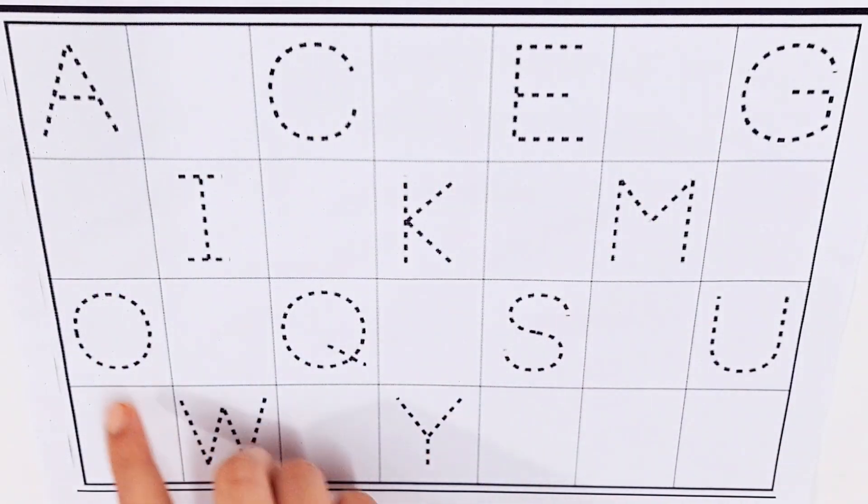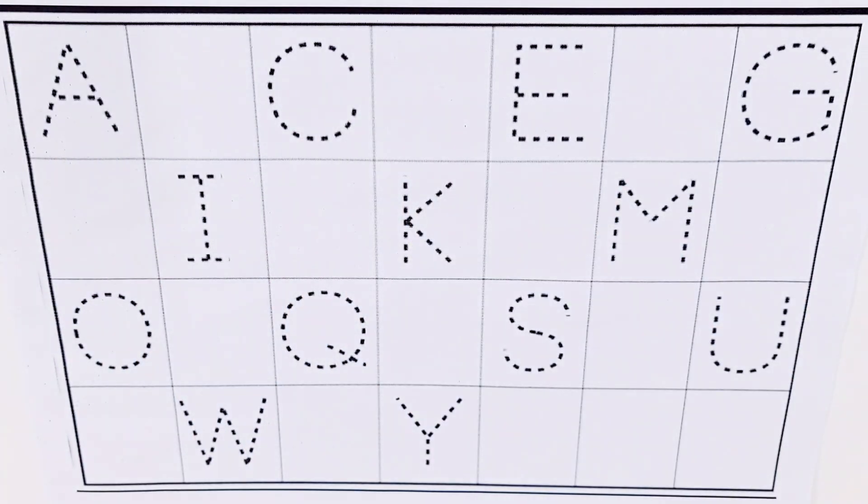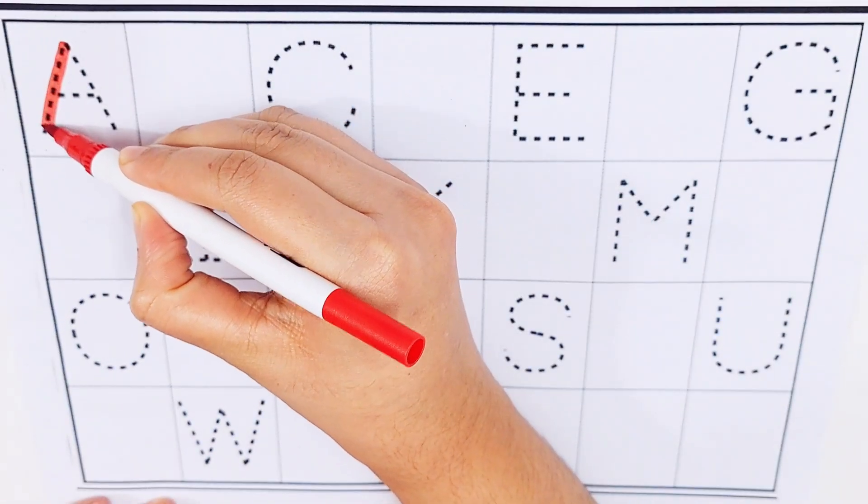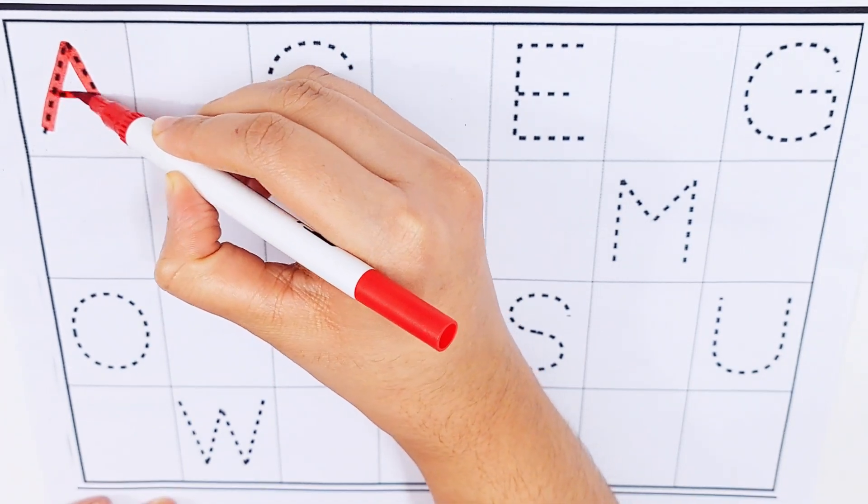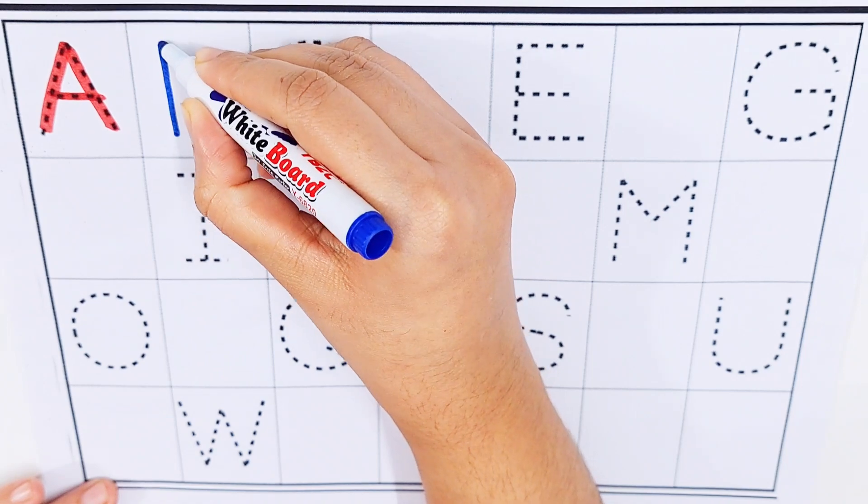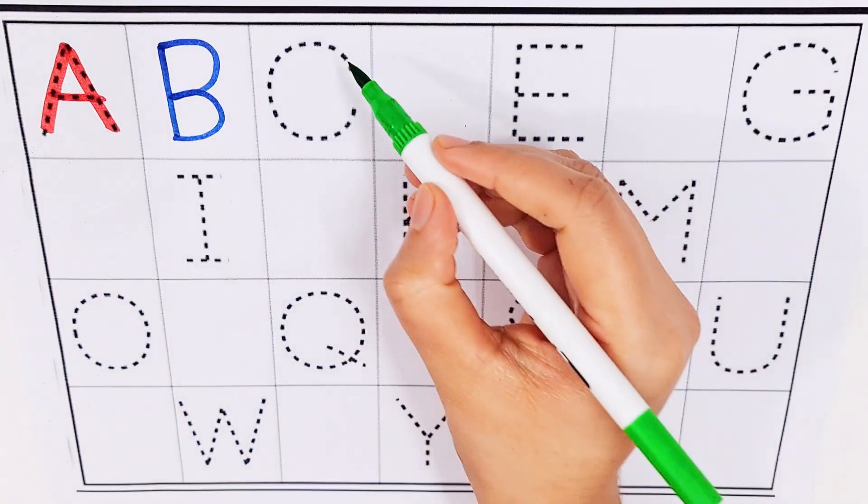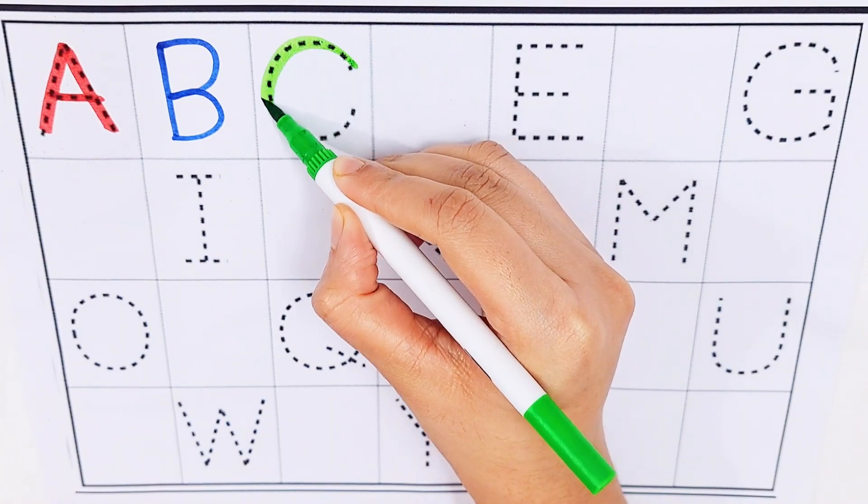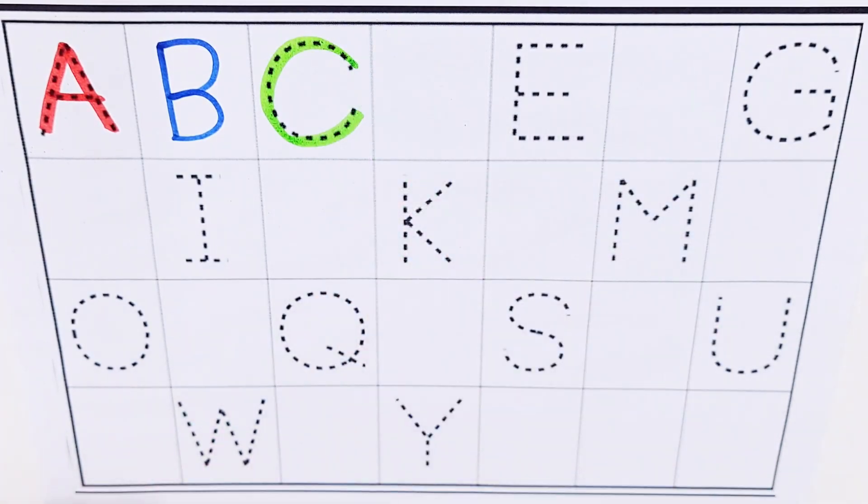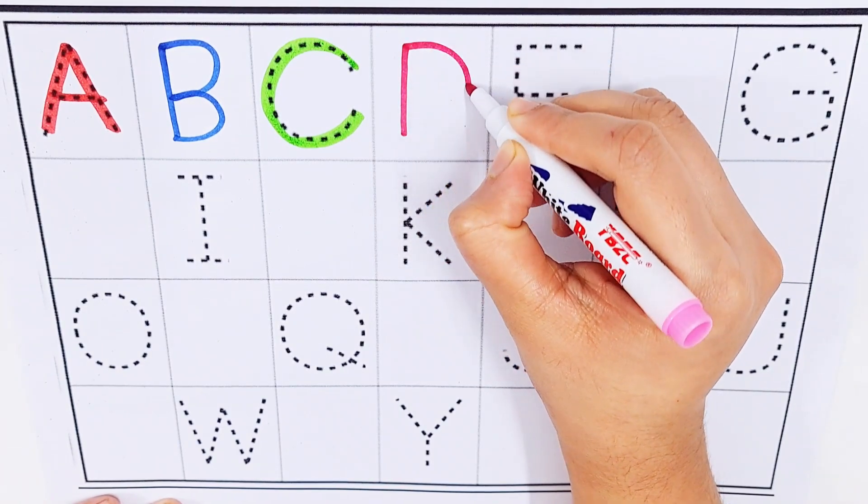Let's try to learn some alphabets. A, B, C, D. A for avocado, B for bus, C for candy, D for dog.